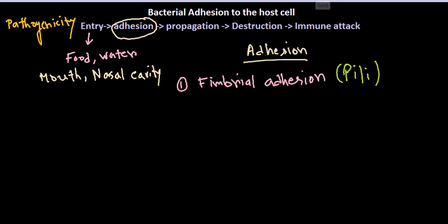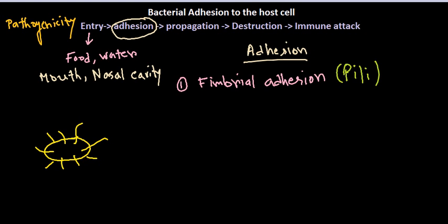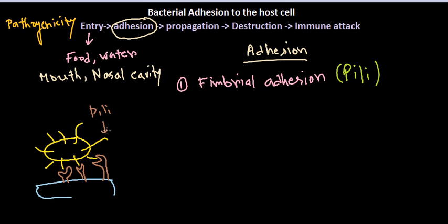If we draw the bacterial cell, we can see different pili projections coming out of it. These pili that extend from different regions of the cell can attach to the host cell surface. The host cell surface expresses different types of glycolipid molecules, and using this glycolipid interaction via the pili, the pathogen can be attached to the host cell. This is the first mechanism of adhesion via fimbrial adhesion.